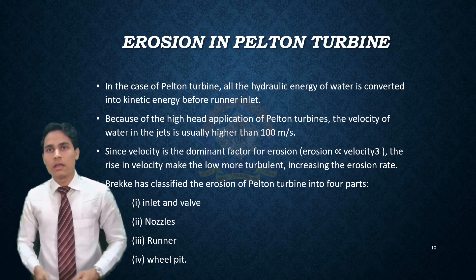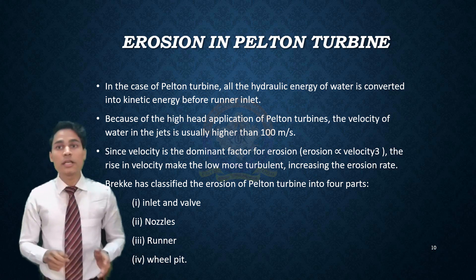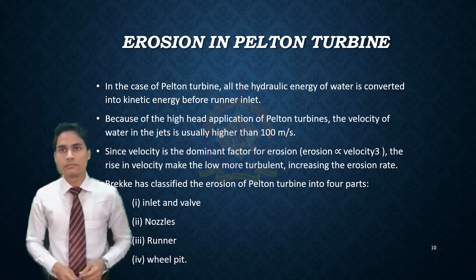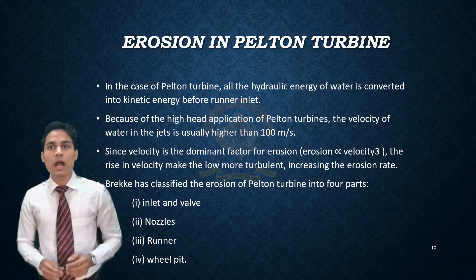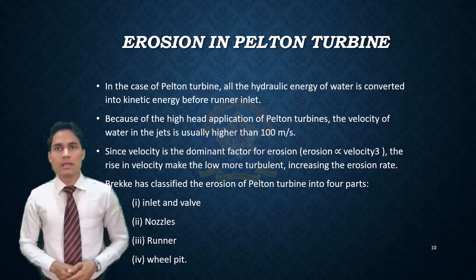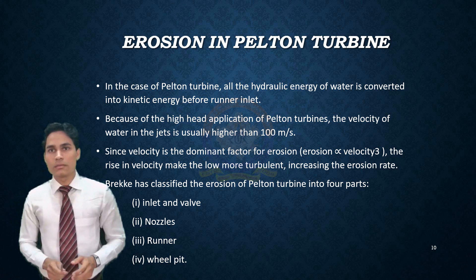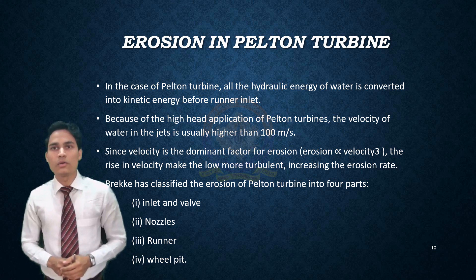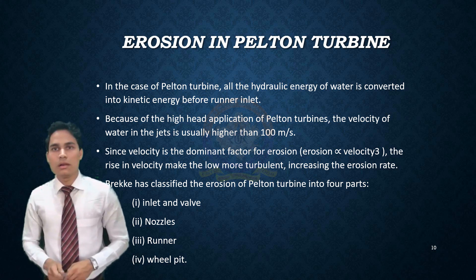Erosion in Pelton turbine. In the case of Pelton turbine, all the hydraulic energy of the water is converted into kinetic energy before the runner inlet. Because of the high application of Pelton turbine, the velocity of the jet is usually higher than 100 m/s. Since velocity is the dominant factor for erosion, the rise in velocity means the flow is also more turbulent, increasing the erosion rate. Erosion of the Pelton turbine is classified into four parts: inlet and outlet valve, nozzle, runner, and wheel belt.